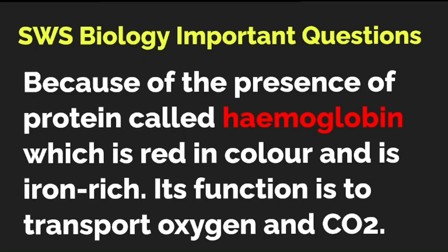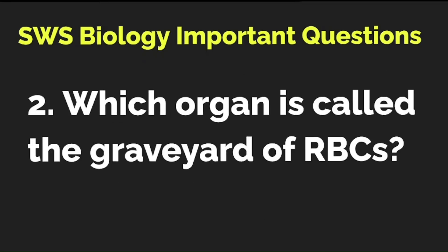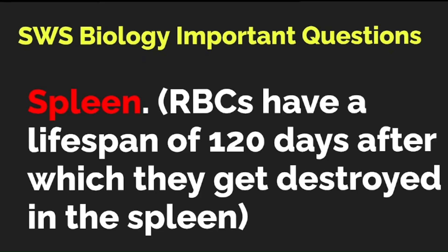This is how a good answer is framed, and that's what we teach you here on SWS. I hope you got it right. Question Number Two: Which organ is called the graveyard of RBCs? The graveyard is where the dead are buried — so which organ is called the graveyard of RBCs? The correct answer is the spleen. RBCs have a lifespan of about 120 days, after which they get destroyed in the spleen.